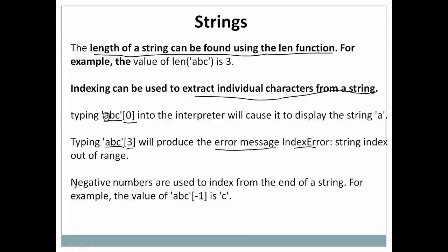It is also possible to use negative numbers for index. In case of negative numbers, it will use the index from the end of the string. For example, 'abc'[-1] returns 'c' because negative indexing always returns values from the end of the string. Minus 1 means the last value, minus 2 the second last, and so on.